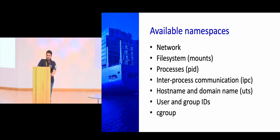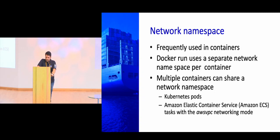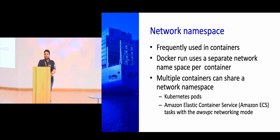The file system namespace is used when you mount something to your container. The PID namespace means every container is an isolated process — when you exec into the container, it cannot see other processes. When you do 'ps' from the Docker host, you see all processes there. The network namespace is the most frequently used namespace in containers. It provides a separate network per container. You can get inside that particular namespace even after the container is created and run commands. You can also switch between network namespaces — if you want two containers to share the same eth0, you can make that possible using network namespaces.